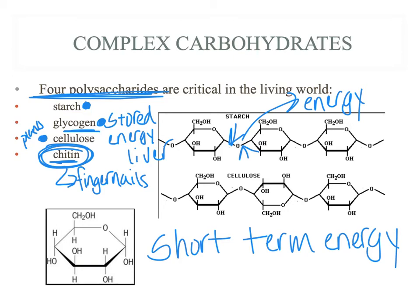So here's a glucose model — this is your monomer. This is one glucose molecule. If you link them together, you're going to get your starches. So monomers are one, and complex carbohydrates — polysaccharides — are going to be more than one. Hopefully that makes sense. Hopefully you want a donut.